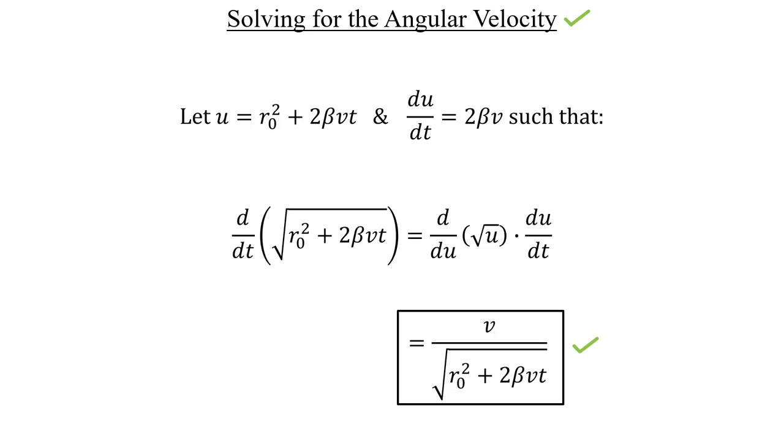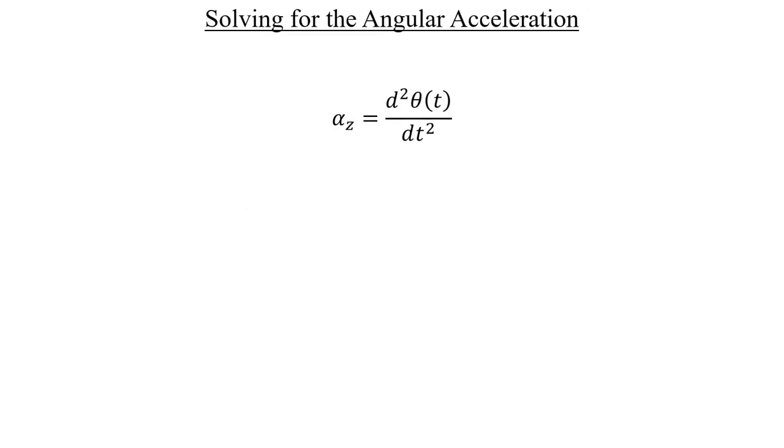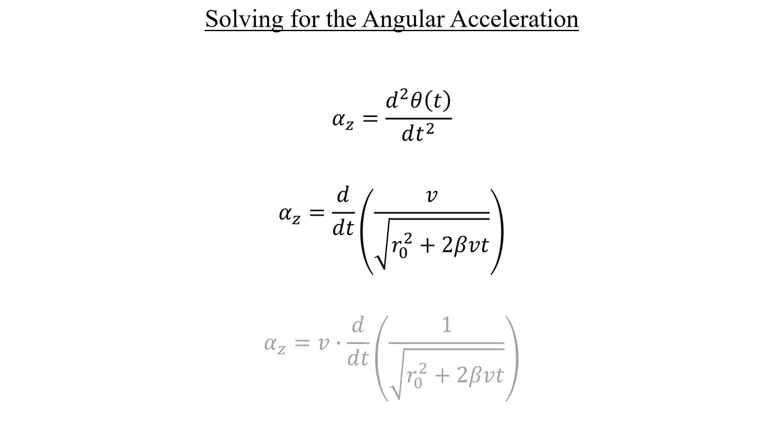Next is the angular acceleration. This definition is similar to what we had for the angular velocity, except now it's a second-order derivative. Instead of doing the first derivative all over again to get to the second one, we can just grab our result from the last slide and take another derivative of that.